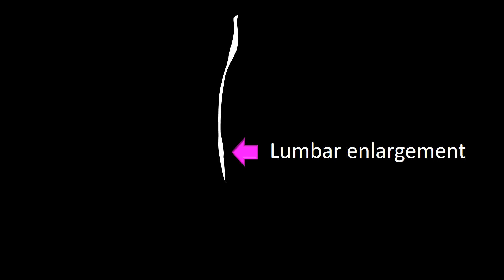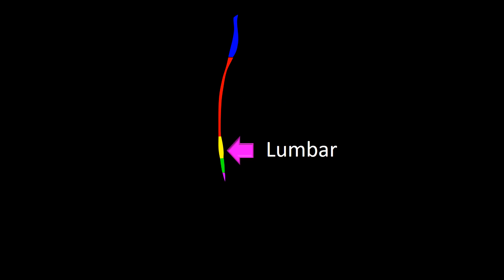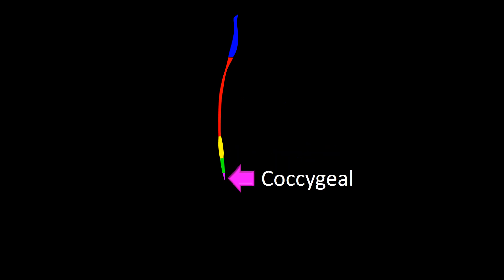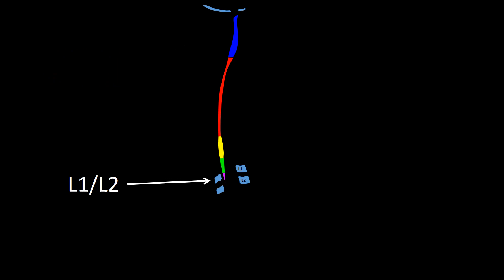The spinal cord is divided into five major regions: cervical, thoracic, lumbar, sacral, and coccygeal. It extends from the foramen magnum to the lower level of L1 vertebra or the upper level of L2 vertebra in adults. The spinal cord is in a canal formed by the vertebral bodies and their arches. There are eight cervical segments corresponding to eight spinal nerves.